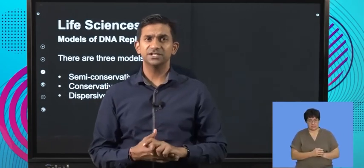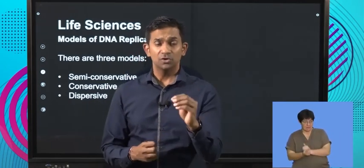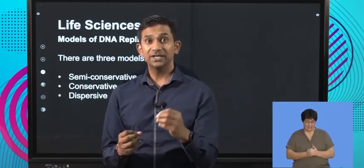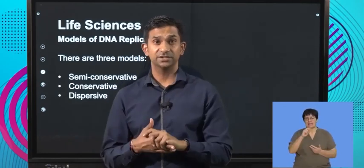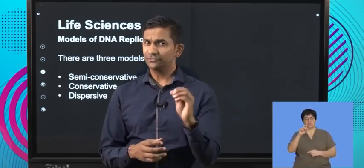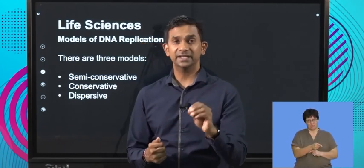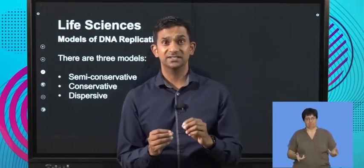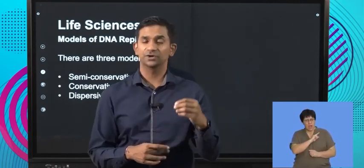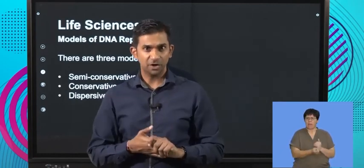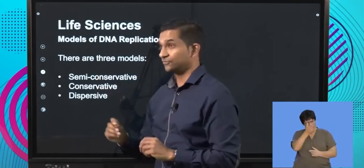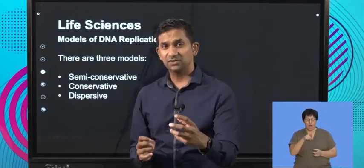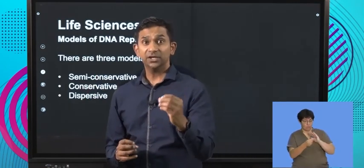Mutations do happen and they often occur in smaller organisms that have a really small genome and reproduce exponentially. So mistakes that occur in DNA replication are referred to as mutations. We're not focusing on mutations today, but it's important to recognize that they do occur. The rate at which they occur leads us to look at models that explain DNA replication, and because of these models we have a better understanding of why DNA replication is such an accurate process.